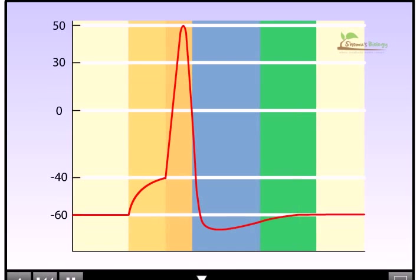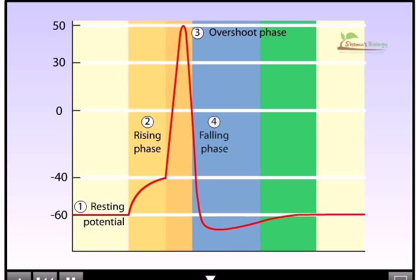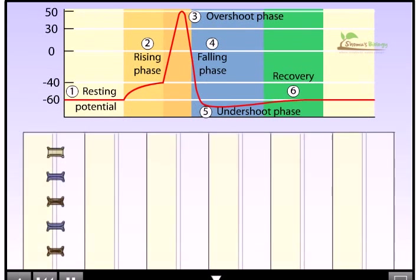The action potential can be divided into six phases: an initial steady state or resting phase, a rising phase, the overshoot phase, the falling phase, the undershoot phase, and the recovery phase. We'll now examine each of these phases in turn.